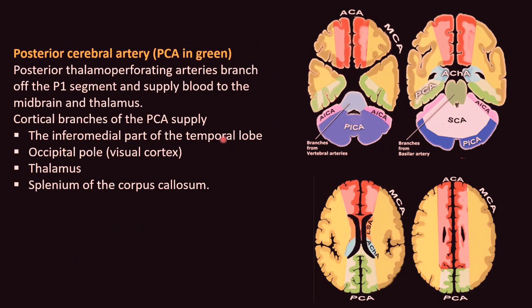The posterior cerebral artery supplies the posterior thalamus via perforating arteries branching from the P1 segment, which supply the midbrain and thalamus. The cortical branches of the PCA supply the inferior part of the temporal lobe, the occipital pole or visual cortex, the thalamus, and the splenium of the corpus callosum.